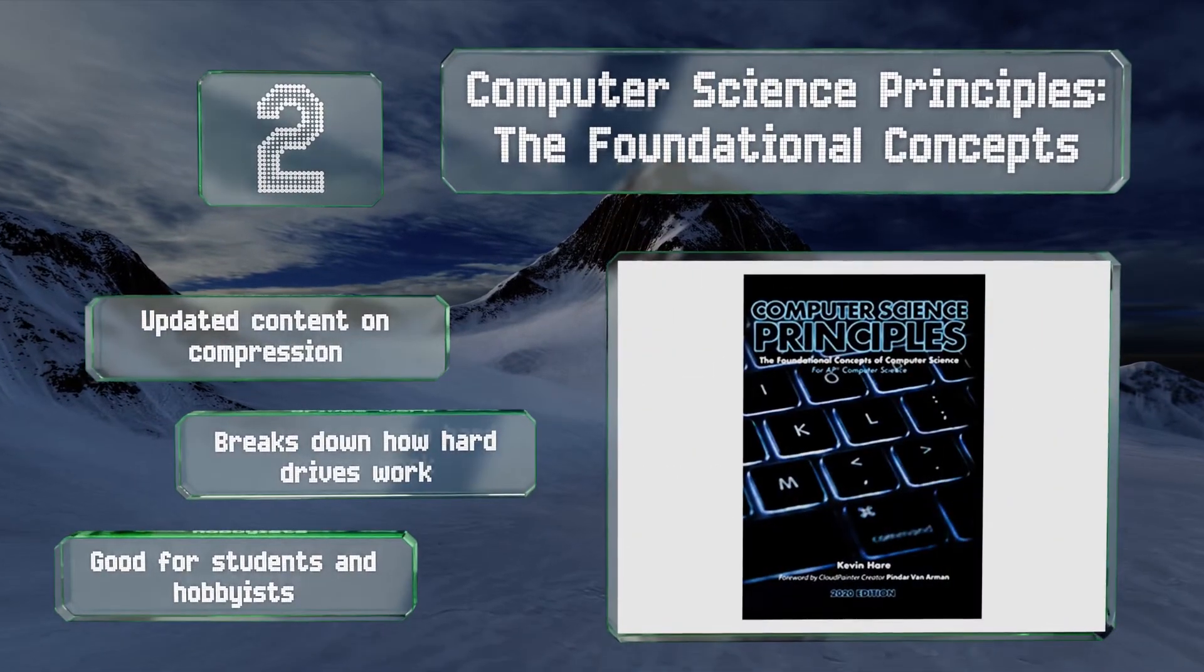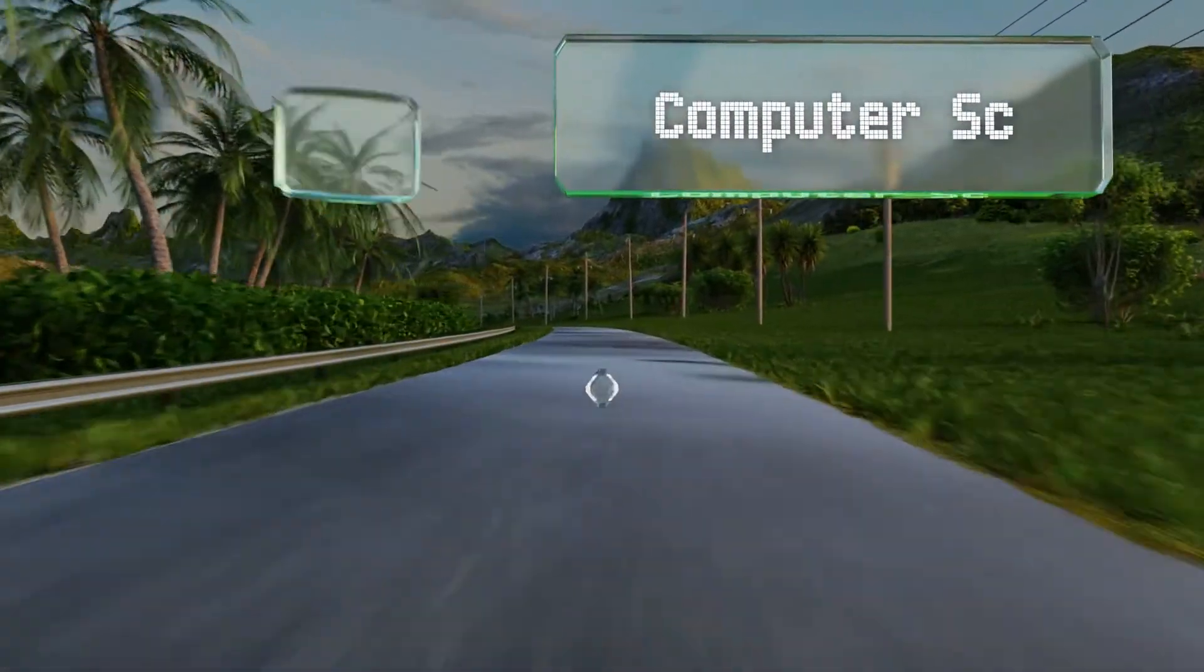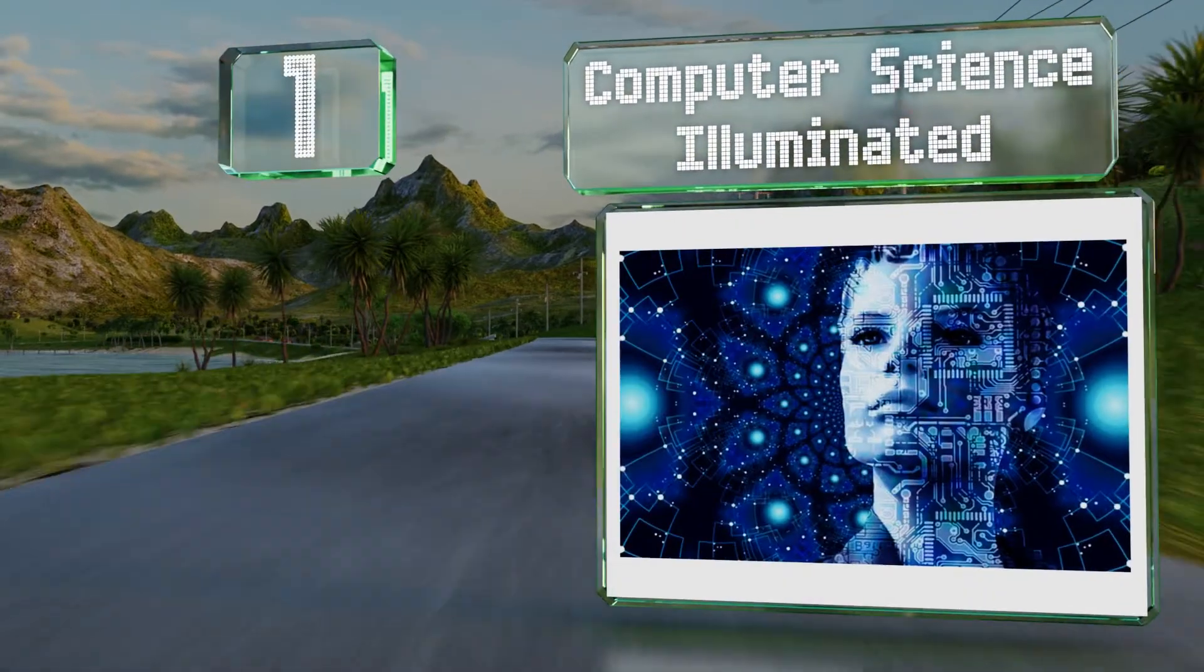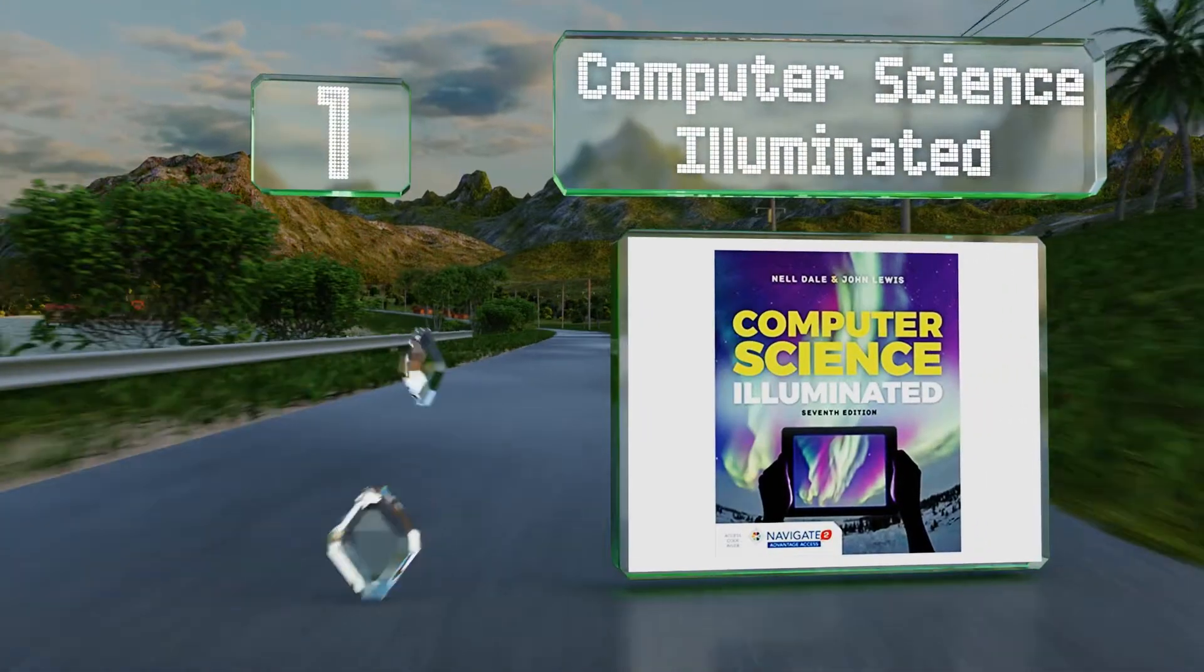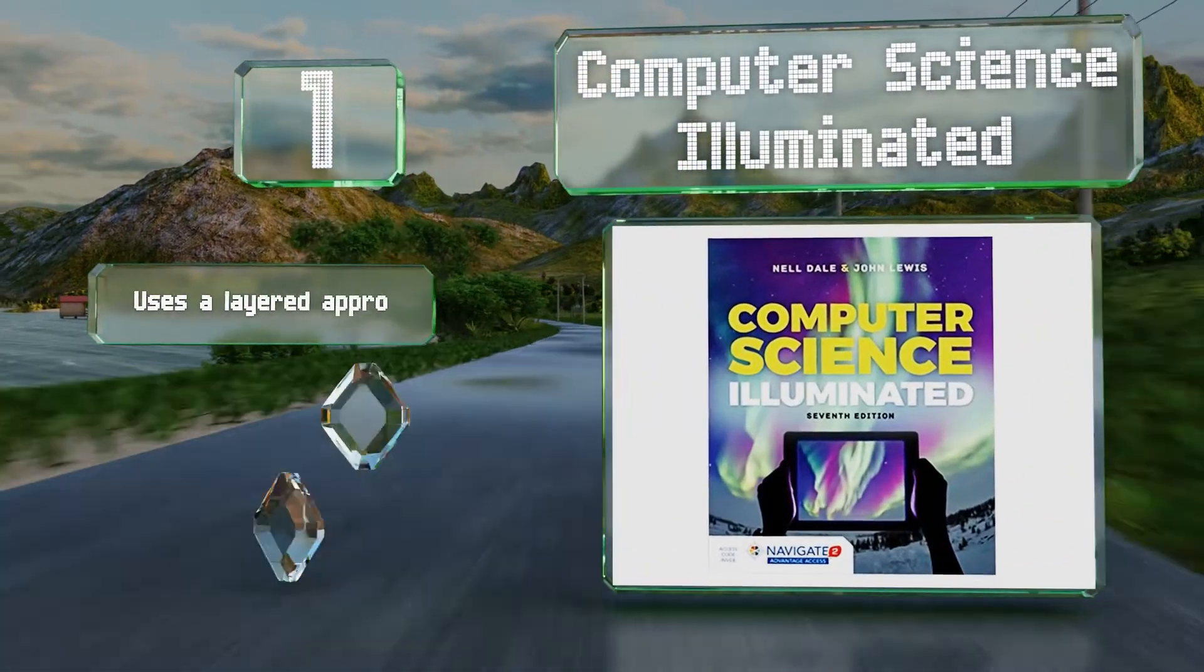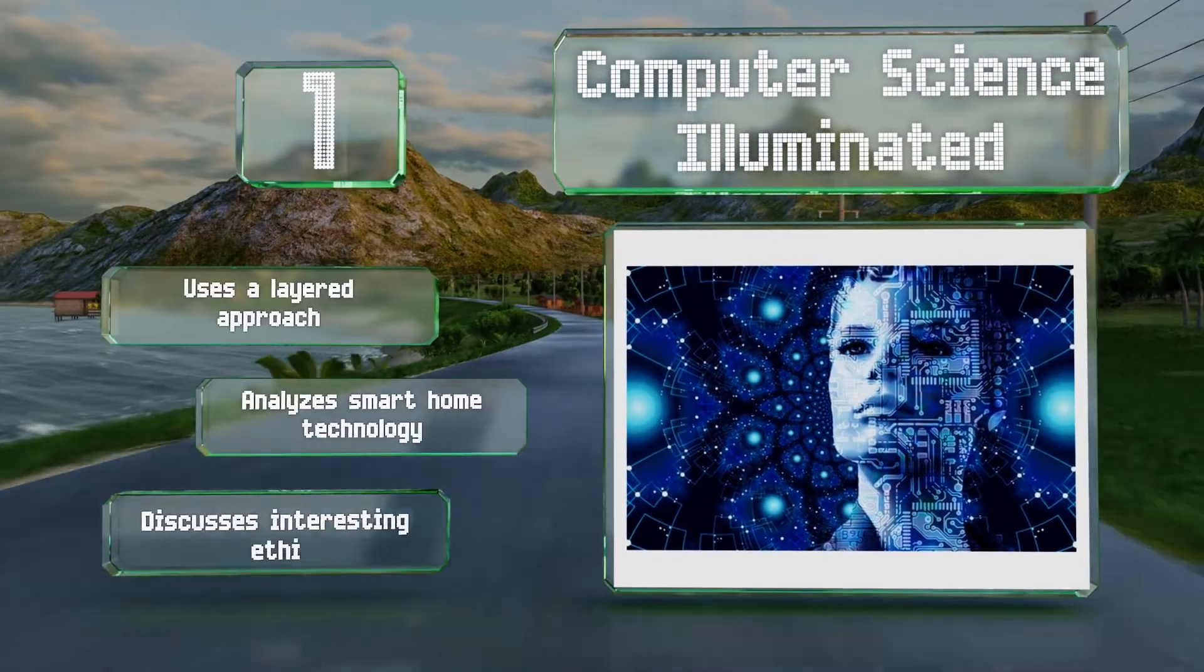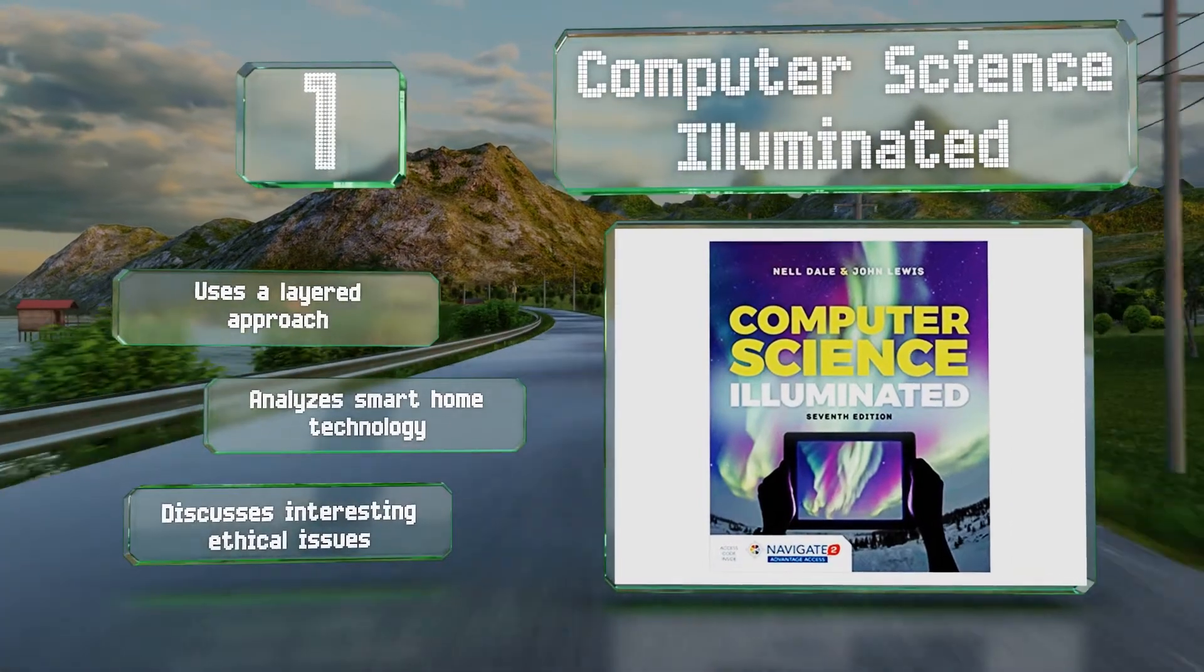And coming in at number 1 on our list, Computer Science Illuminated is designed to bring even the most inexperienced readers up to snuff on the basics and provide them with a solid foundation for moving on to more advanced topics. It uses a layered approach, analyzes smart home technology, and discusses interesting ethical issues.